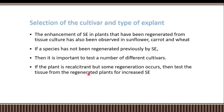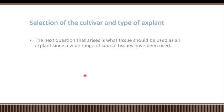If the plant is recalcitrant but some regeneration occurs, use tissue from the regenerated plant for increased somatic embryogenesis. Some plants are recalcitrant in nature — certain tissues may be regenerating while others are not responding. For example, among floral tissue, xylem tissue, or mesophyll cells, one type of tissue may be more responsive than another. So first we select the most responsive cultivar, then select the most responsive tissue within that cultivar.